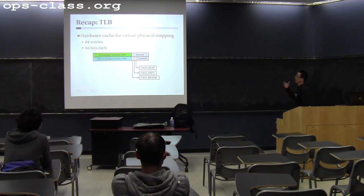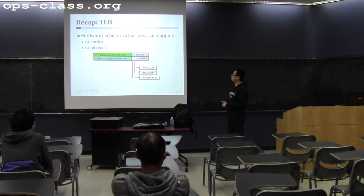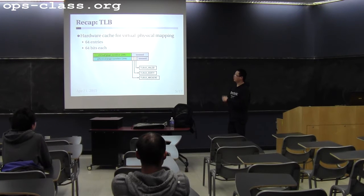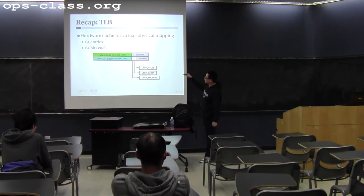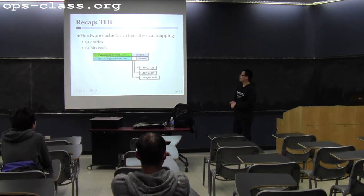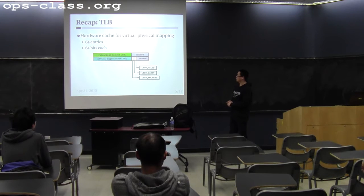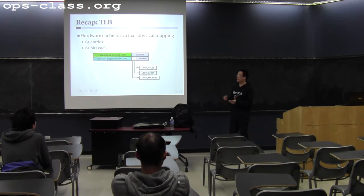Finally, we talked about the TLB. In the MIPS architecture, the TLB is basically a hardware map that translates the virtual page number — the upper 20 bits of the virtual address — to the physical page number, which is the upper 20 bits of the physical address. It also has flags: a valid bit indicating whether the TLB entry contains a valid translation, and a dirty bit.